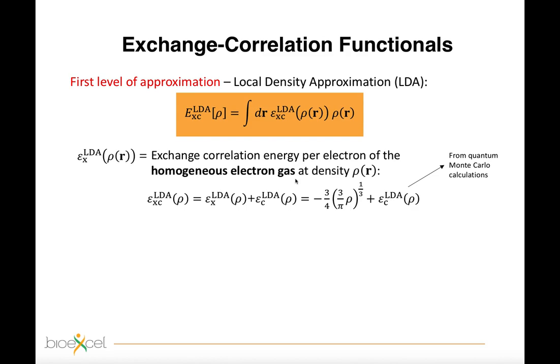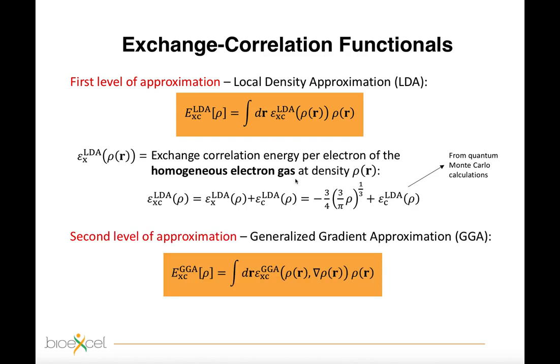In spite of its success mainly for atomic properties, the local density approximation is known to overbind particularly in molecules. For this reason, in chemistry more sophisticated approximations are commonly employed, as for example the generalized gradient approximation or GGA.